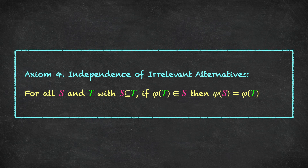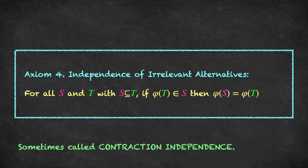There is an axiom in consumer theory called the weak axiom of revealed preferences, which captures essentially the same idea. The axiom in bargaining theory, independence of irrelevant alternatives — which Nash apparently discovered before Samuelson proposed the weak axiom in consumer theory — captures the very same idea. One controversial thing about this axiom is simply its name: deeming some alternatives irrelevant does seem like a large assumption. Some top authors working in bargaining theory therefore prefer the term contraction independence, which better describes the mathematical property — as the bargaining set contracts but the solution remains in the set, the solution doesn't change.